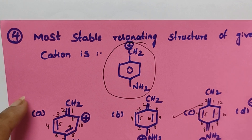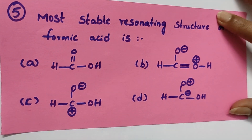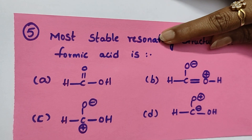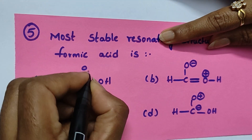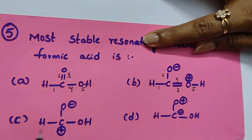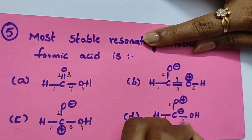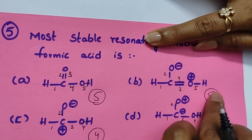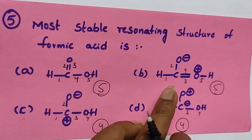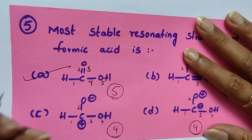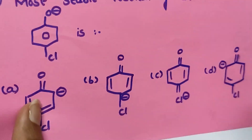Question number five: most stable resonating structure of formic acid. Count the number of bonds — structure A and B both have five bonds; structures C and D have four bonds. So it's between A and B. Option A has no charge — it is a neutral molecule. Option B has a charge. Therefore A is the correct answer.